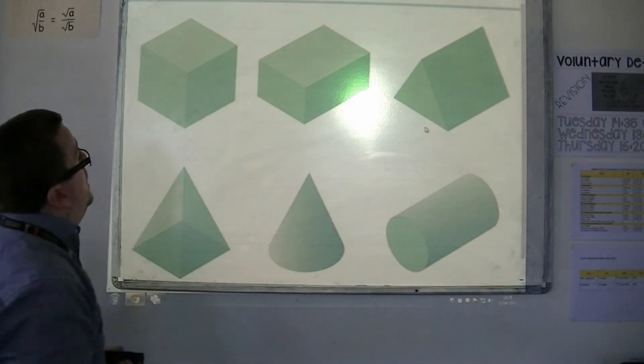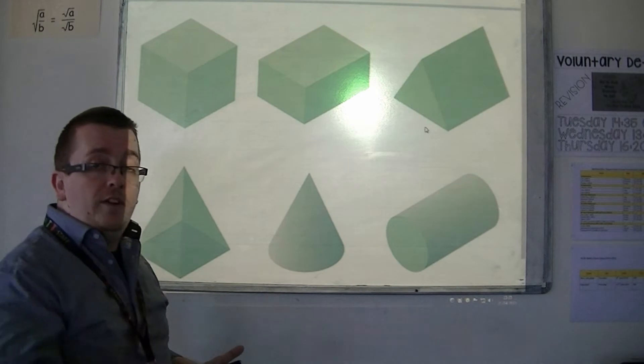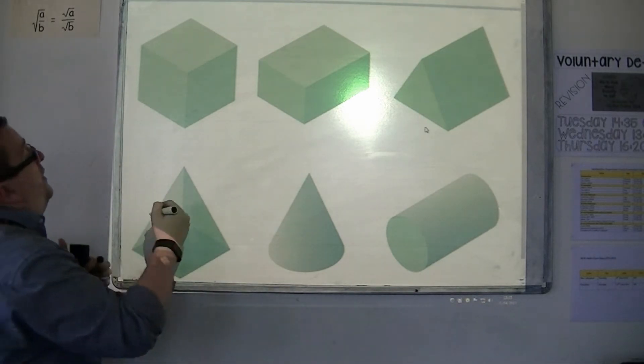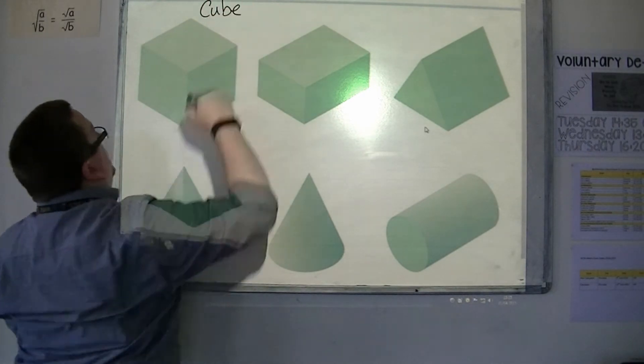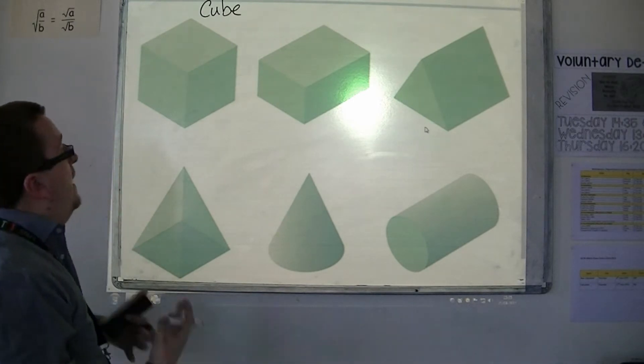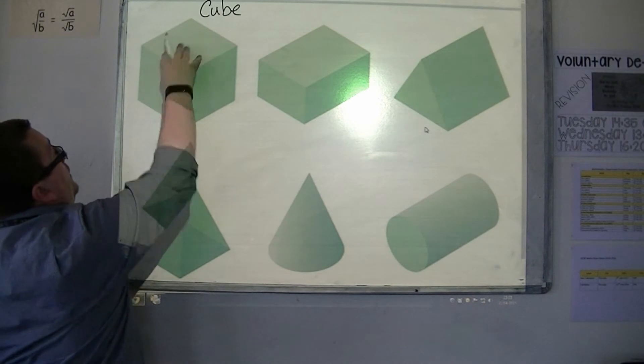This one up here where all of the faces are the same size, each face is a square, this is known as a cube. You will be used to things like a Rubik's cube for example. So each face is a square.